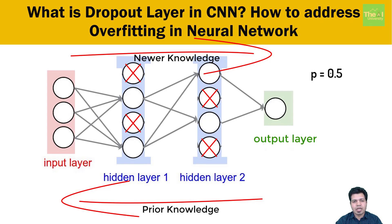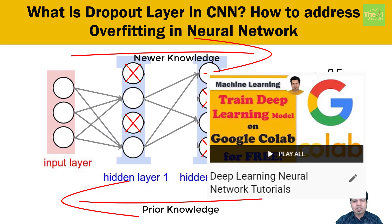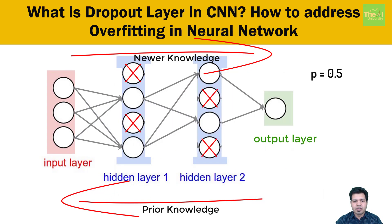If you are not aware of concepts like back propagation, loss function, or model training flow in neural networks, you can watch our series — the link is given in the i-button above. This was one complete cycle or iteration of neural network training. In the next iteration, the same thing happens: some nodes, based on the dropout rate, are selected randomly again and then deactivated.